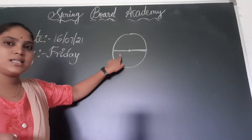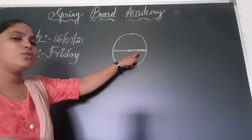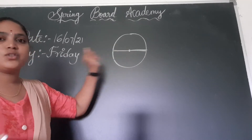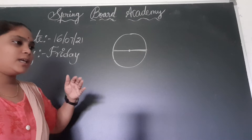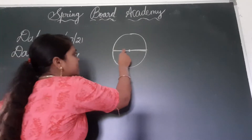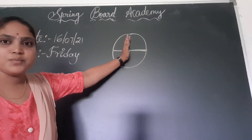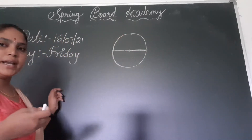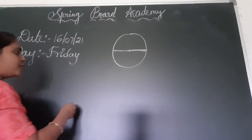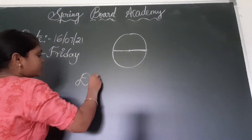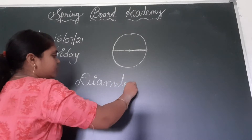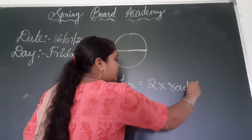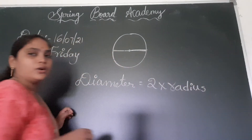This is radius and this is radius. If we draw two radii, we will get one diameter. So, diameter is twice the radius. We can observe only half of the diameter — that is radius. So, radius is half of the diameter. Diameter is equal to two into radius, and radius is half of the diameter.